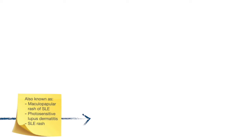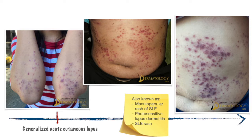Generalized ACLE, also referred to as the maculopapular rash of SLE, photosensitive lupus dermatitis, and SLE rash, presents with widespread exanthematous eruption, often focused over the extensor aspects of the arms and hands, and characteristically sparing the knuckles.